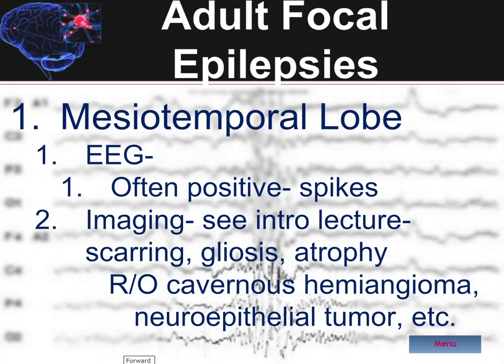The imaging of choice — coronal views — are best used to look for mesiotemporal sclerosis, i.e., hippocampal sclerosis, gliosis, and/or atrophy of the hippocampus. Other focal lesions are also within the differential diagnosis.